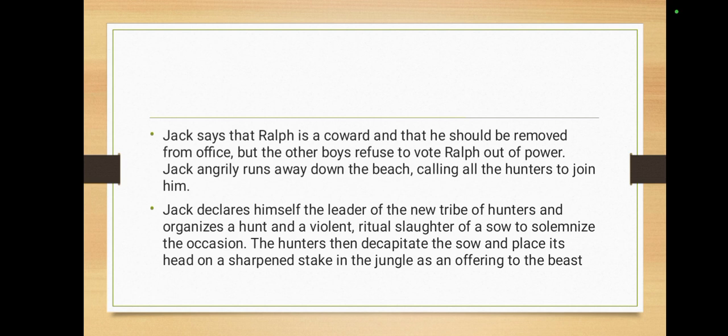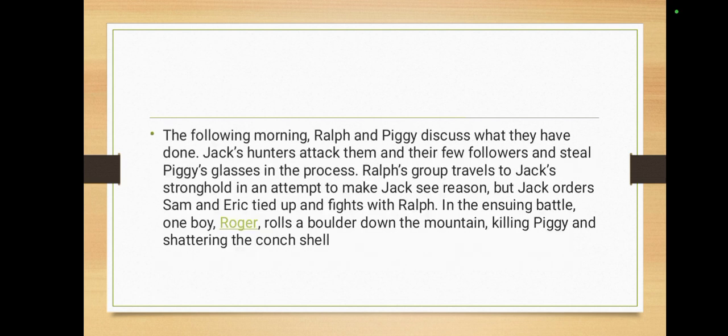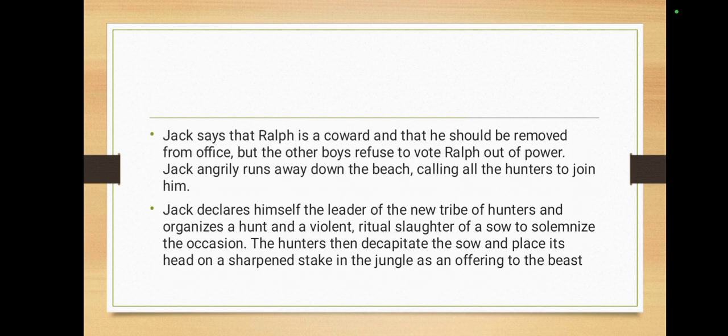Ralph rallied the remaining boys to build a new signal fire, this time on the beach rather than the mountain. They obeyed, but before they finished the task, most of them slipped away to join Jack. Jack declared himself leader of a new tribe of hunters, organized a hunt, and performed a violent ritual slaughter of a sow to ceremonialize the occasion. The hunters then decapitated the sow and placed its head on a sharpened stick in the jungle as an offering to the beast.